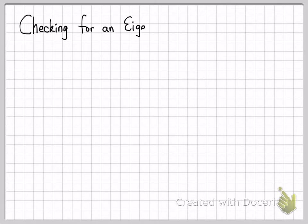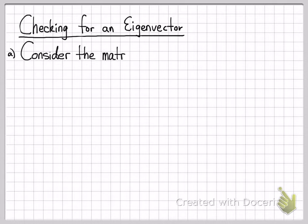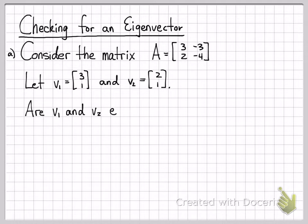In this problem we are going to look at some matrices and determine if some given vectors are eigenvectors of the matrix or not. In part a, let's deal with this 2 by 2 matrix A. So A is the matrix 3, negative 3, 2, negative 4, and we're given two vectors: v1 is the vector 3, 1 and v2 is the vector 2, 1. The question that we are asked is: are the vectors v1 and v2 eigenvectors of A?